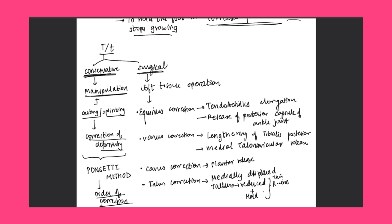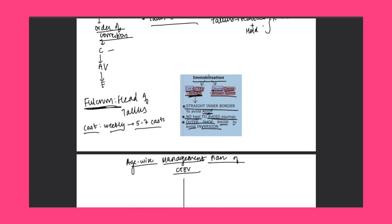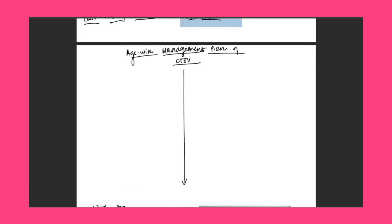Coming to surgical options: for equinus correction, tendo Achilles elongation and release of the posterior capsule of the ankle joint are performed. For varus correction, lengthening of tibialis posterior and medial talonavicular release are done. For cavus correction, plantar release is performed. For talus correction, the medially displaced talus is reduced and held with K-wires.